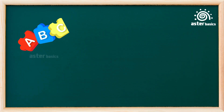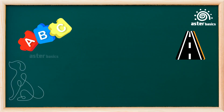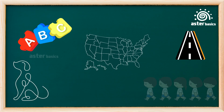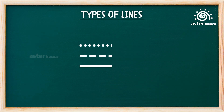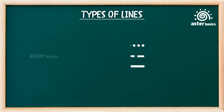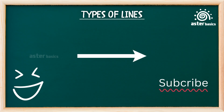Lines are everywhere — in letters, roads, art, maps, even the lines you stand in at school. In drawing, a line is just a path made by a point moving. But there are many kinds of lines, and each one can show direction, feeling, or meaning. Let's start with the ones you already know.